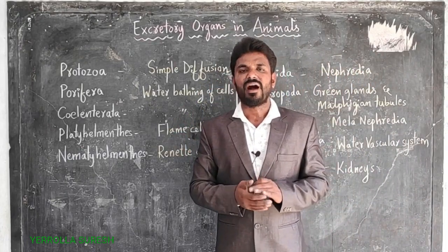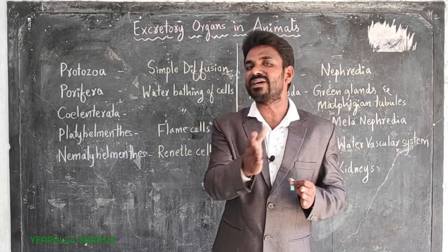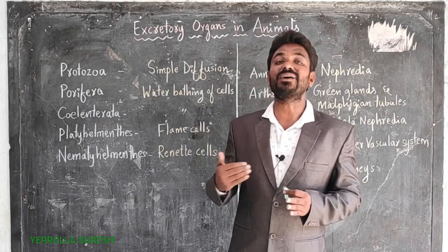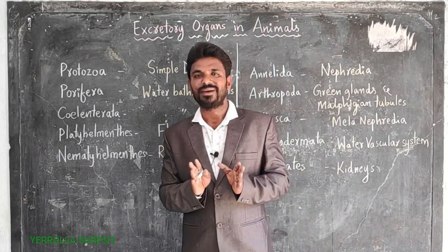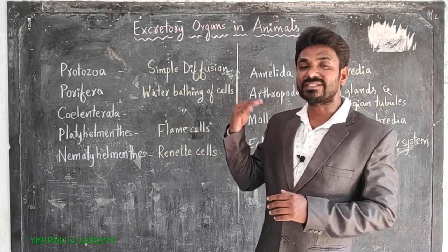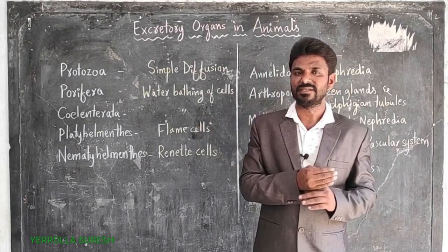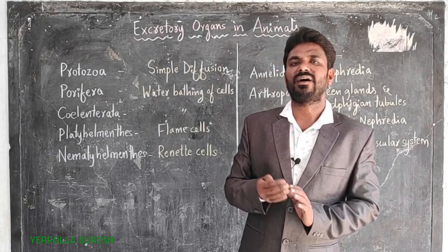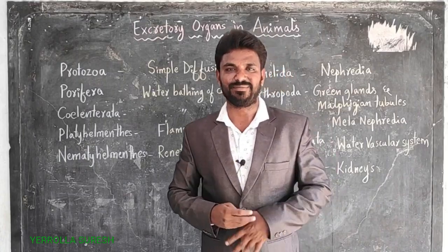By observing all these things, we understand that all organisms excrete waste material for their survival. However, excretory organs are different across organisms. The process of excretion is common, but the existence of excretory organs is not common — excretory organs vary from one organism to another. Animals do not have the same kind of excretory organs; they vary from organism to organism.